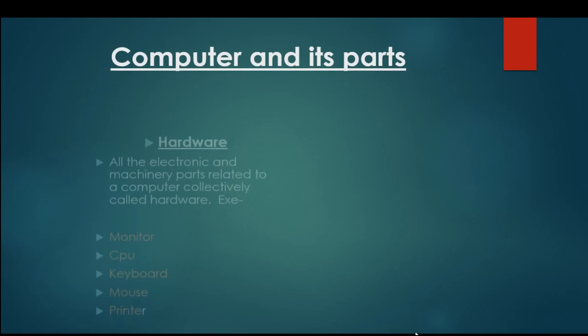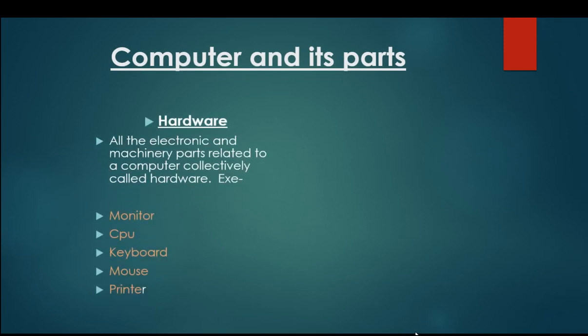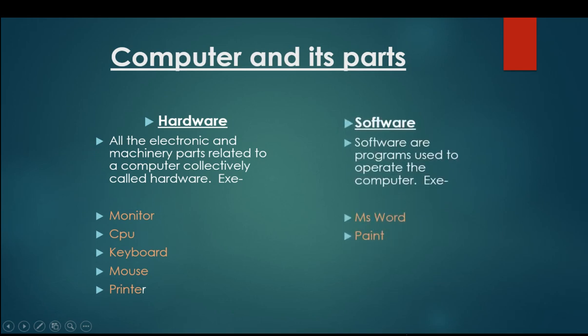Computer and its parts. Computer is having two parts, one is hardware, one is software. Hardware. All the electronic and machinery parts related to the computer are collectively called hardware. Example, monitor, CPU, keyboard, mouse, printer. These are hardware parts.